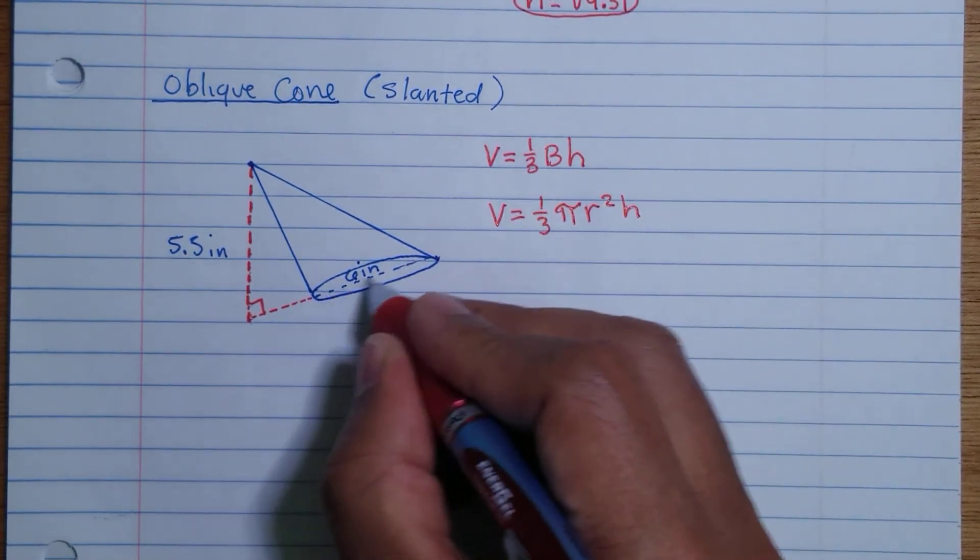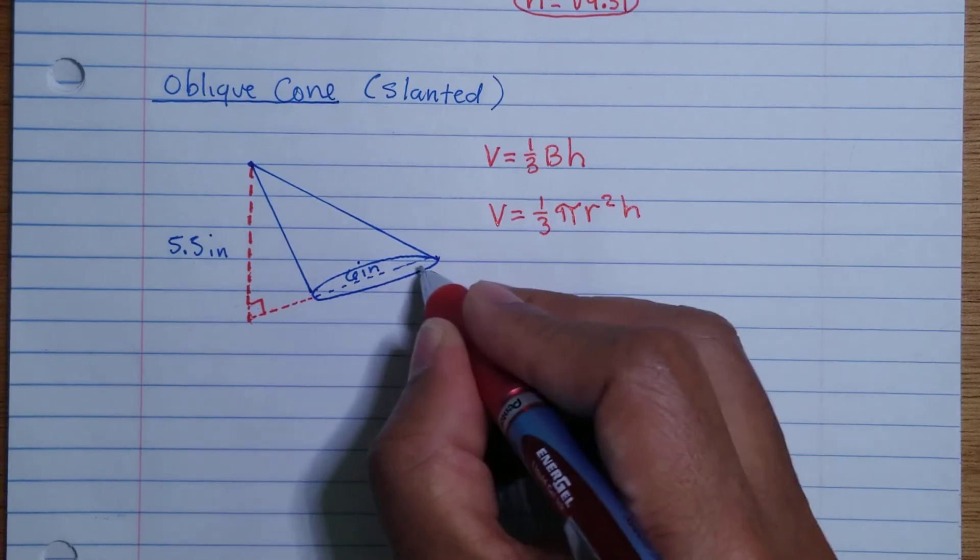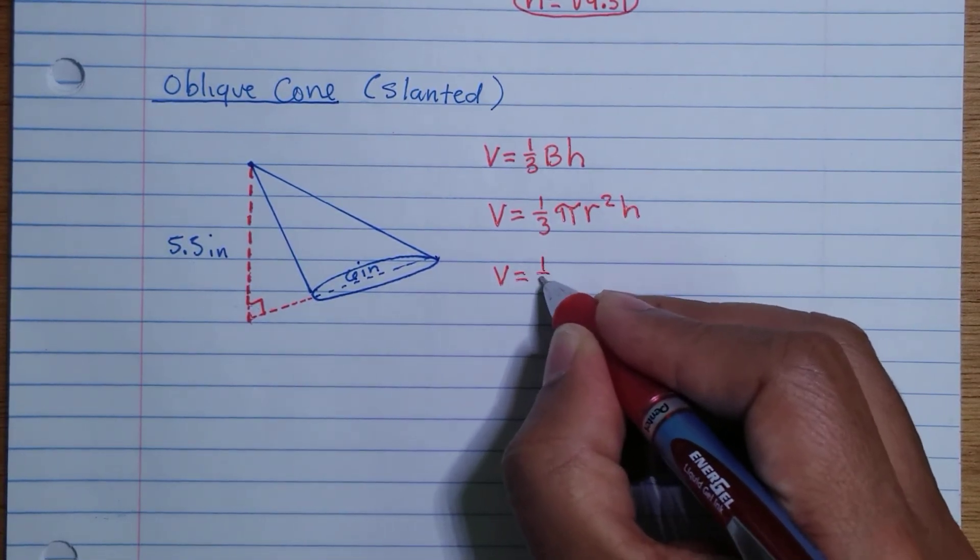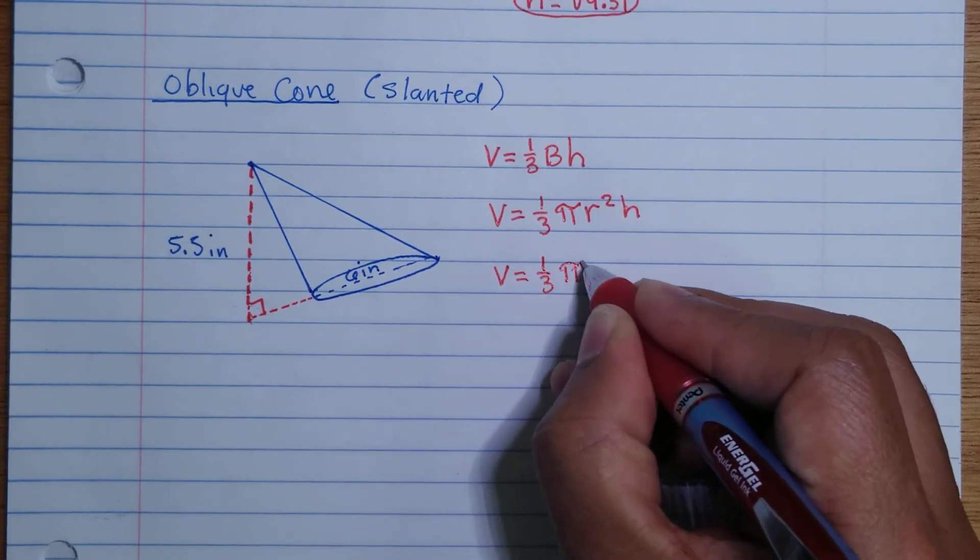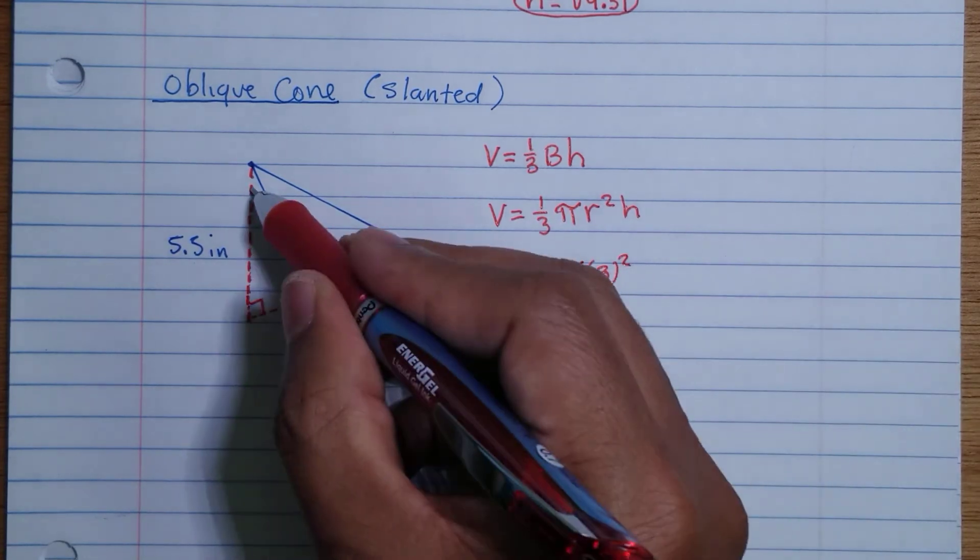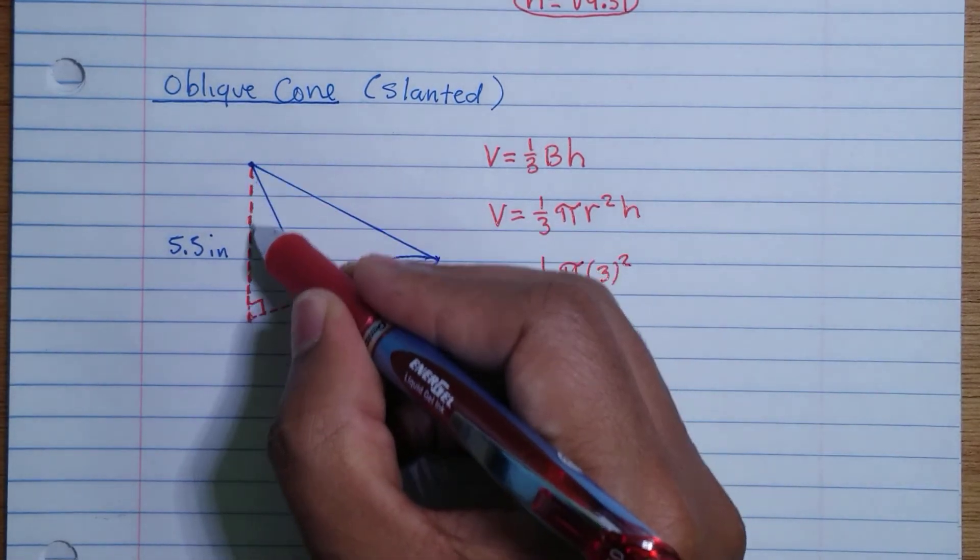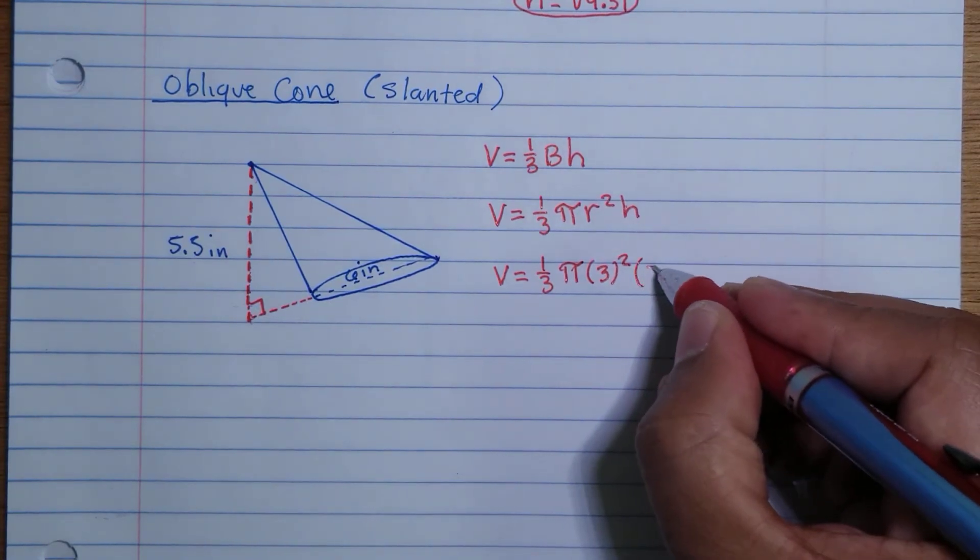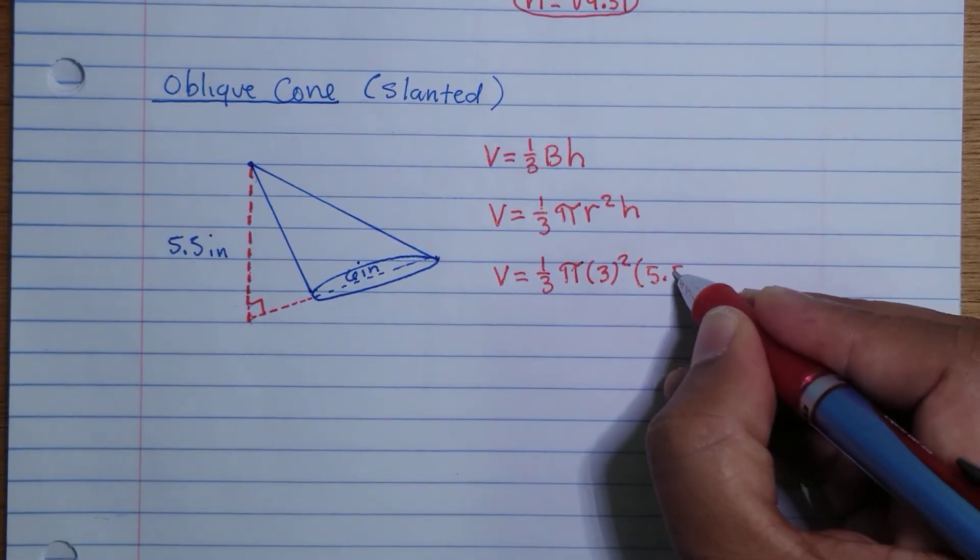Since we're given that the diameter is 6 inches, we know the radius is half of that. So 1/3 times π times 3² times the height. This one we have an exterior height, times 5.5.